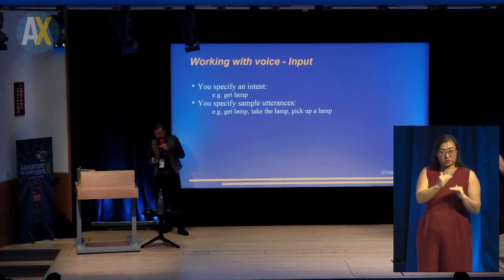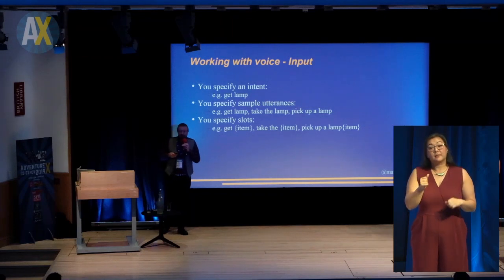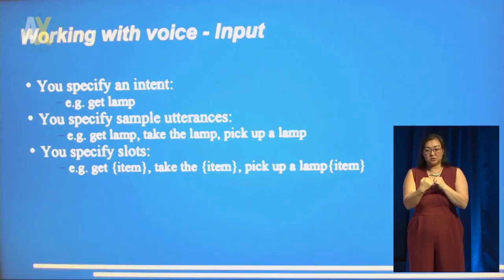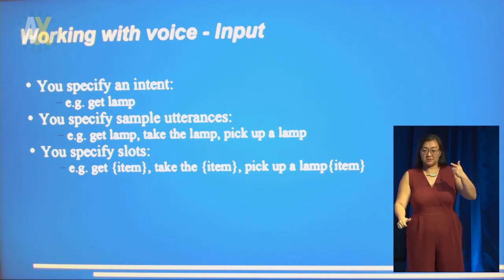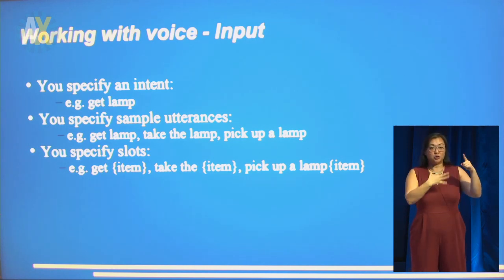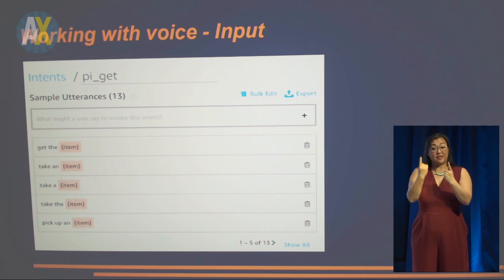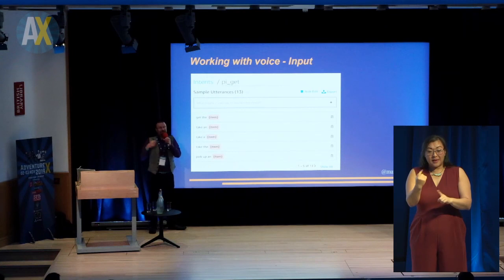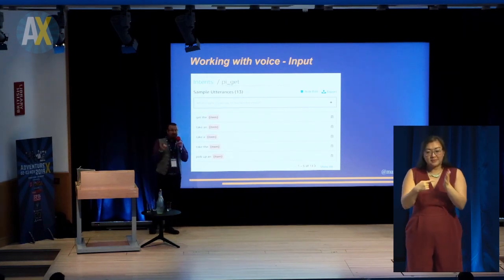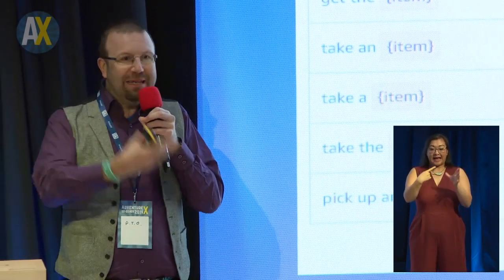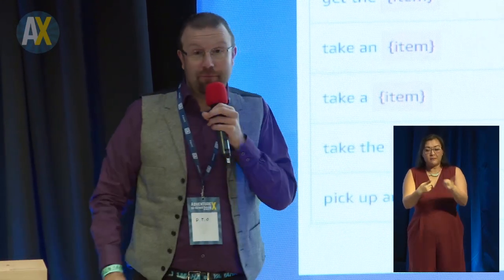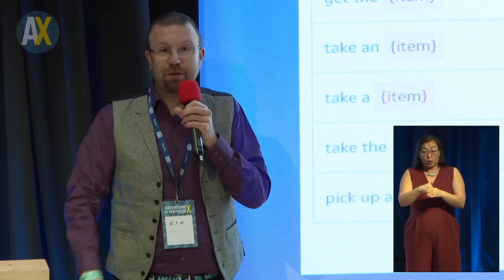You also have a system called slots. You don't have to say get lamp, get box, get axe separately — you can say get item and give a list of items, and Alexa will go through every combination and give you back one call saying, okay game, the player got the box, do what you will. For example, this is the get intent for picking up stuff, and at the bottom you can see there were 13 different ways I could think of to say get an item. Even things like take a and take an have to be included explicitly, because Alexa might mishear a and an, or someone might not be grammatically correct and say get a axe. If you don't include it in the list, Alexa will not respond at all.